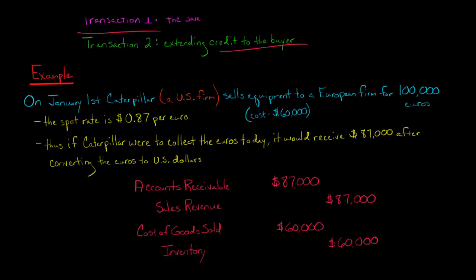Now, I know what you're thinking. Well, hey, we don't know if we're going to get $87,000 yet. Hold off. We'll deal with that in the second part of the transaction. Let's finish the first part first. So we debit accounts receivable, credit sales revenue, just like any typical sale, for $87,000.